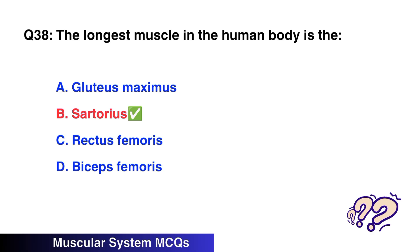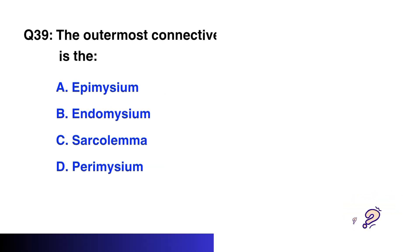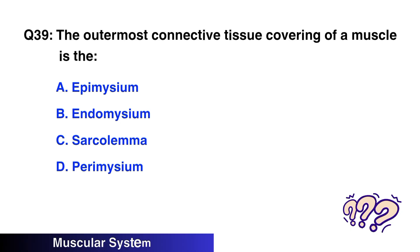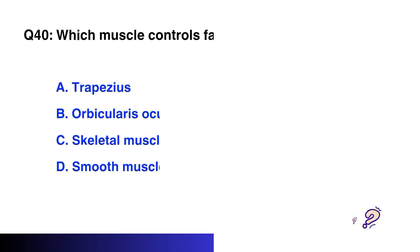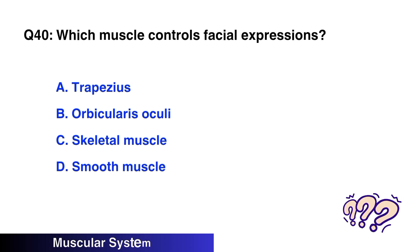Question No. 38: The longest muscle in the human body is the — the right option is B: Sartorius. Question No. 39: The outermost connective tissue covering of a muscle is the — the right option is A: Epimysium.